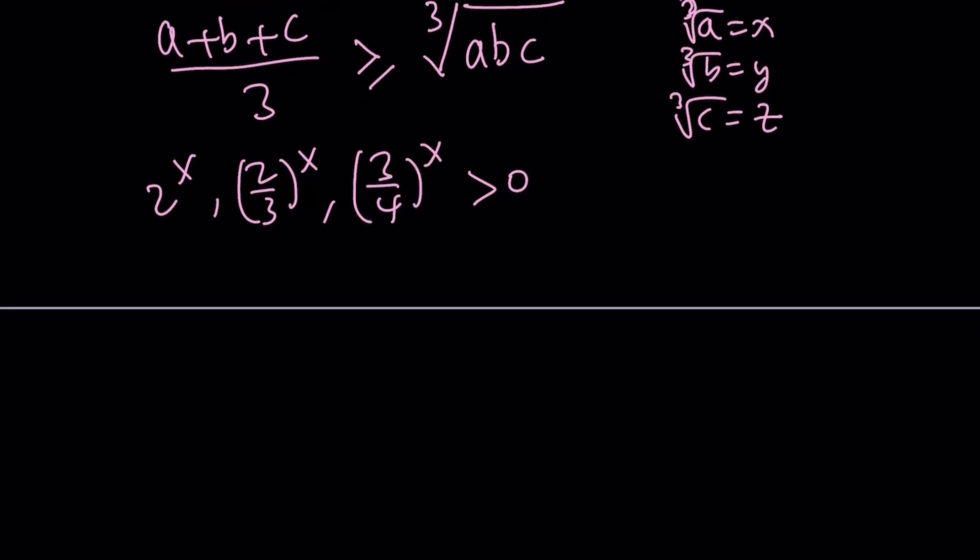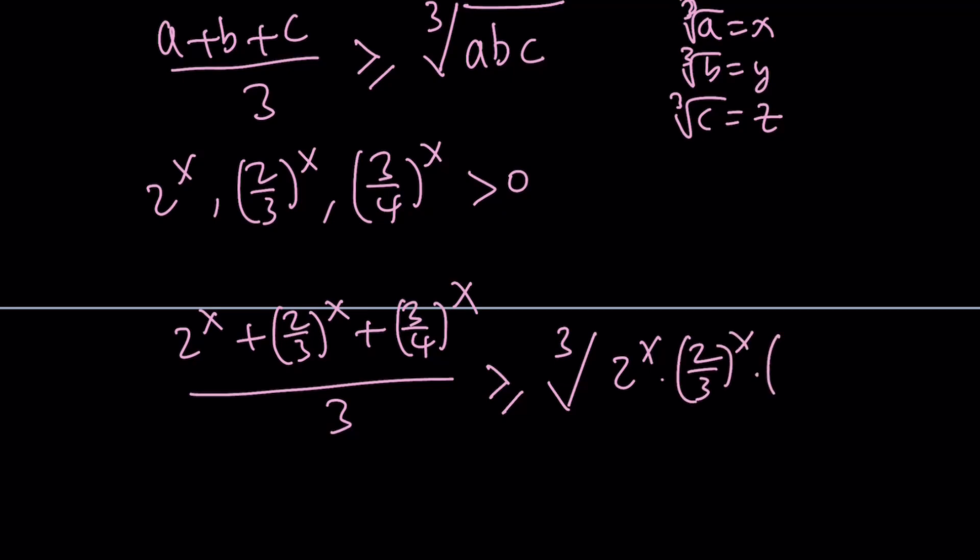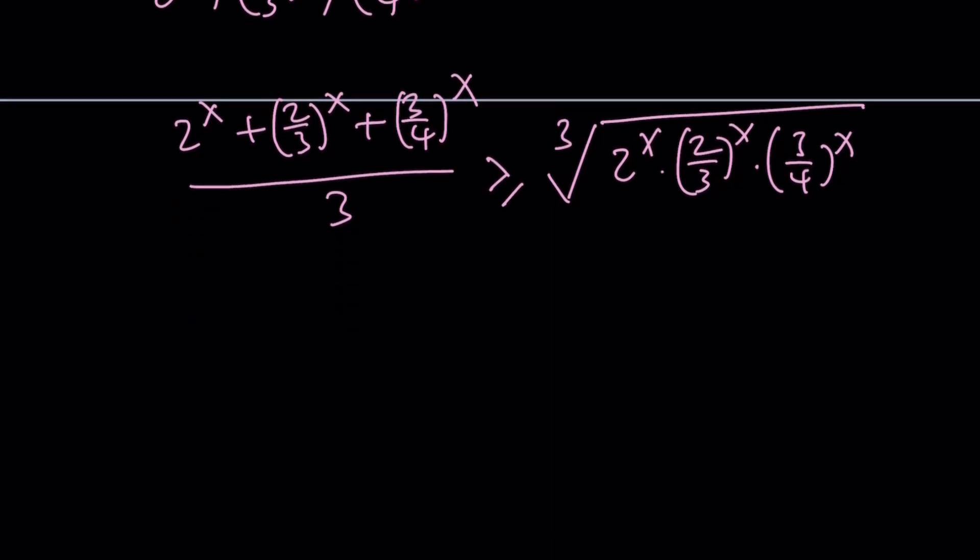So here's what we're going to do. 2^x + (2/3)^x + (3/4)^x, add them up and divide by 3. That's going to give you the arithmetic mean. It's always going to be greater than or equal to the cube root of 2^x times (2/3)^x times (3/4)^x. So AM-GM gives us the following.